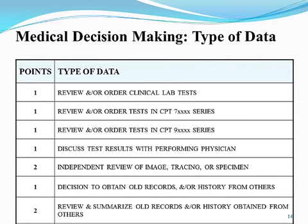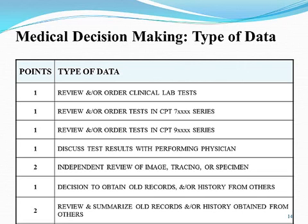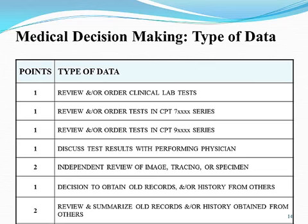Moving on to the second area of medical decision-making: type of data. You'll see the point system on the left and the type of data on the right. The first item is review and order clinical lab tests. You don't get two points for reviewing and ordering on the same date — you get one point for ordering today, and if the patient returns in three weeks and you review the results, you get a point at that time, but not two on the same date.